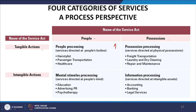In the first quadrant, where tangible action is happening on people, that becomes people processing — services directed at people's bodies. Examples include hair styling, where the person must be present; passenger transportation, where the person must be there to be transported; and healthcare, where the person should be at the medical facility.